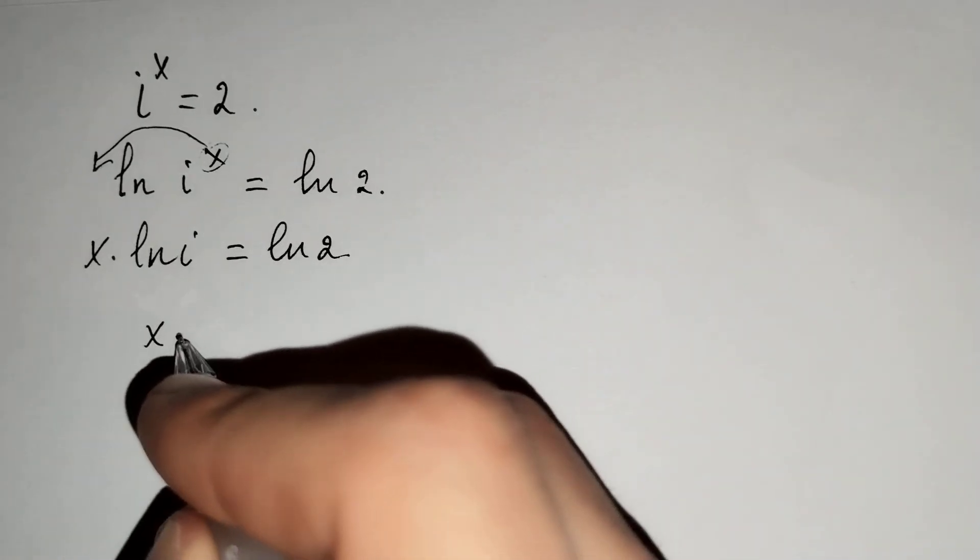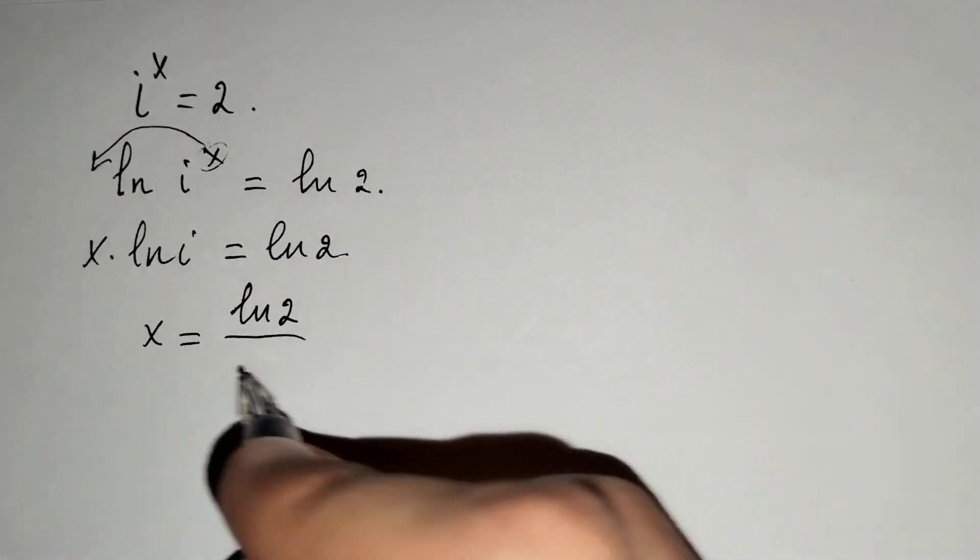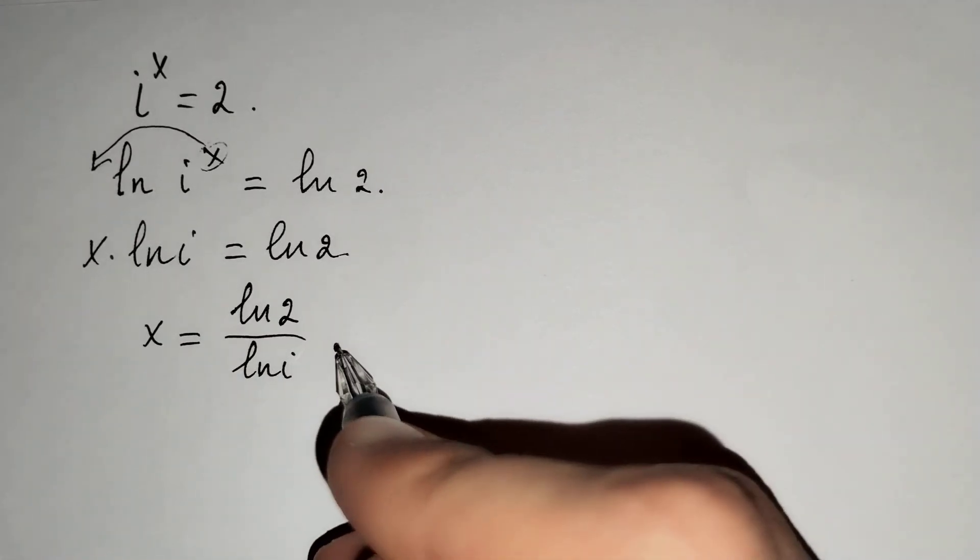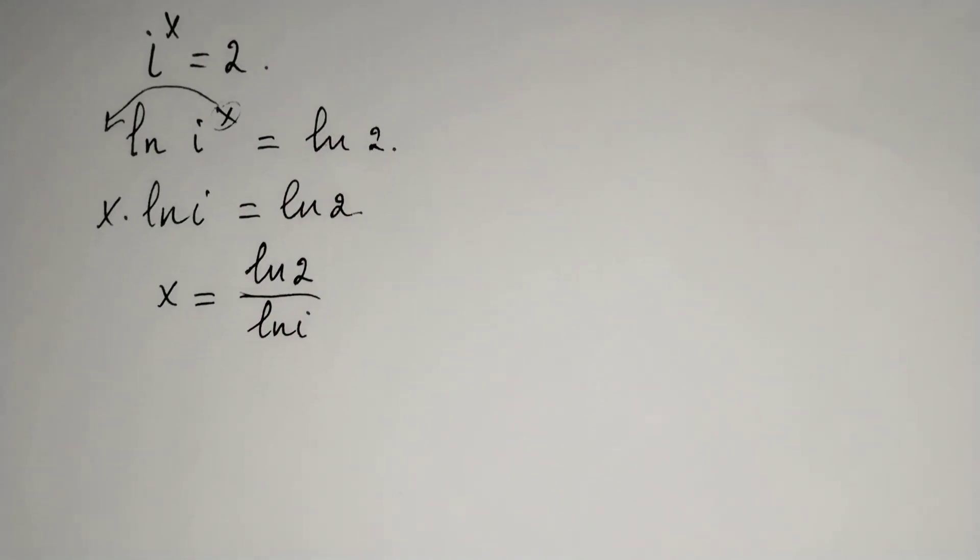And if we find x from this equation, x equals ln 2 over ln i. And we know ln 2, that's why we should find ln i.